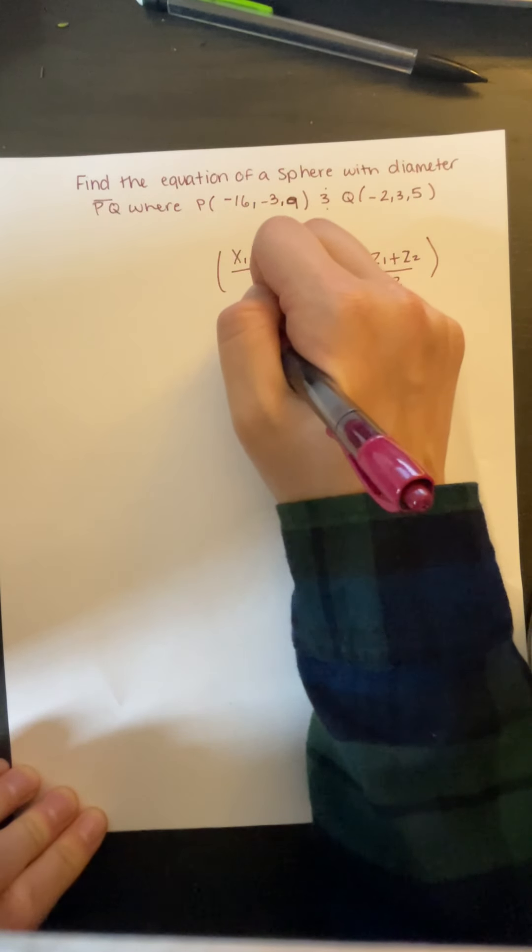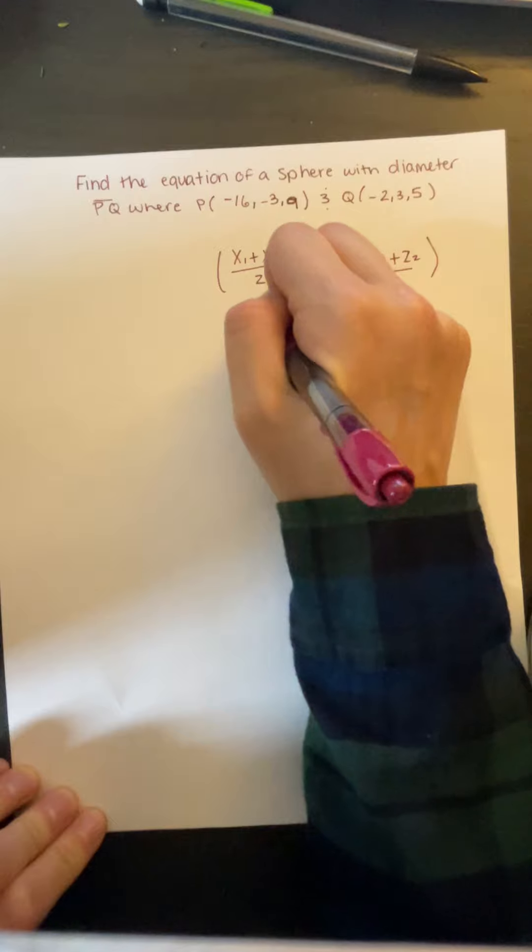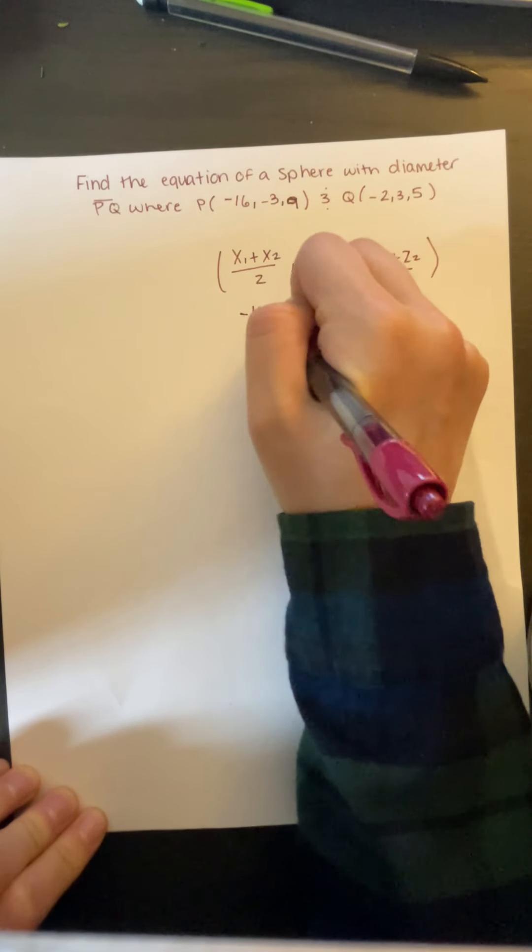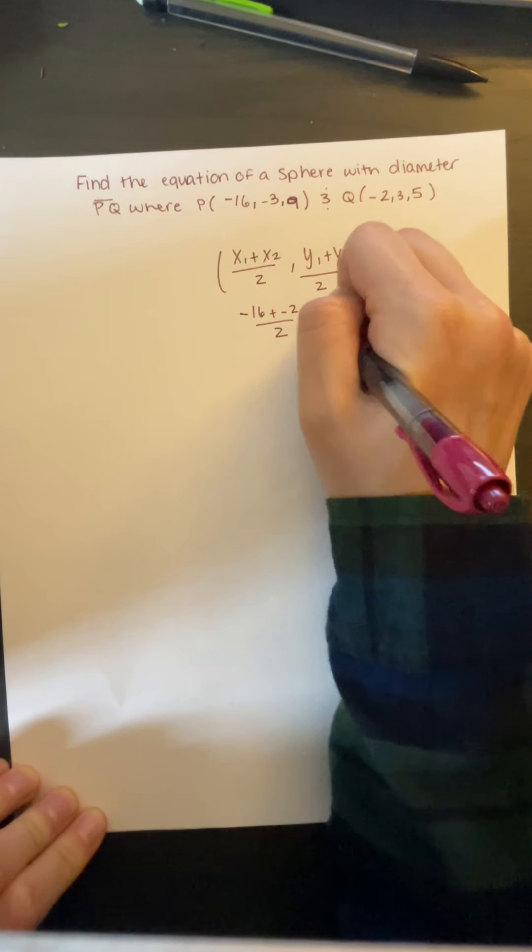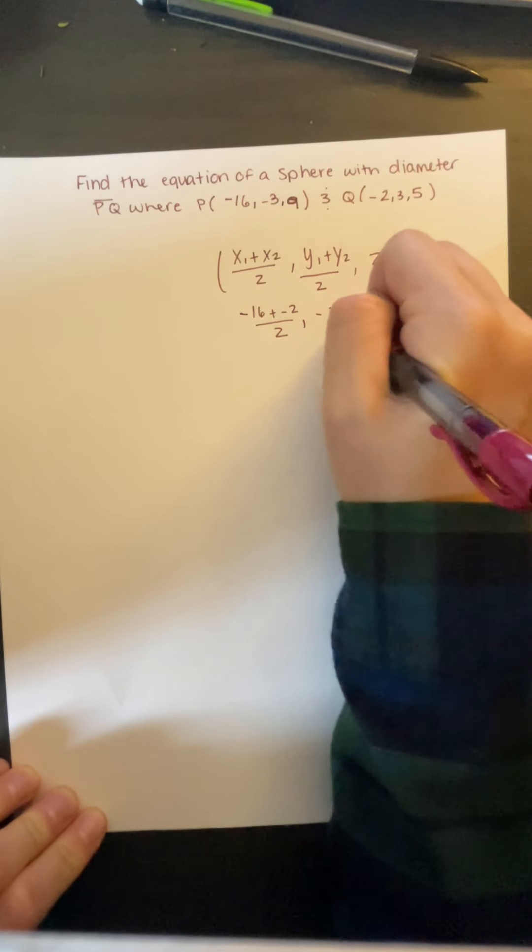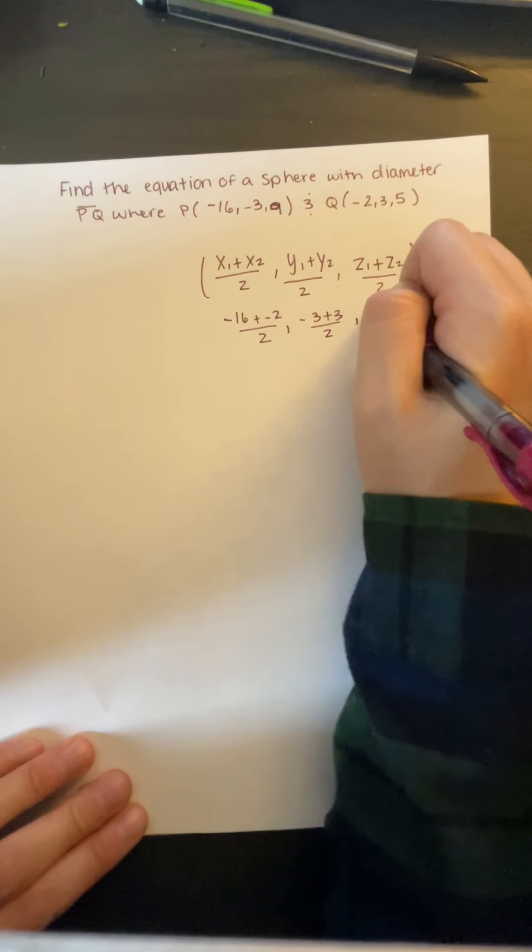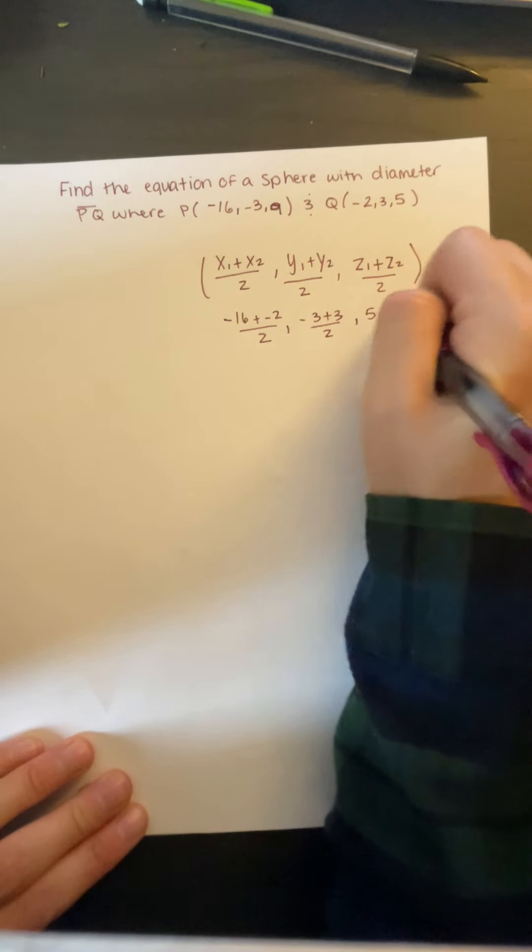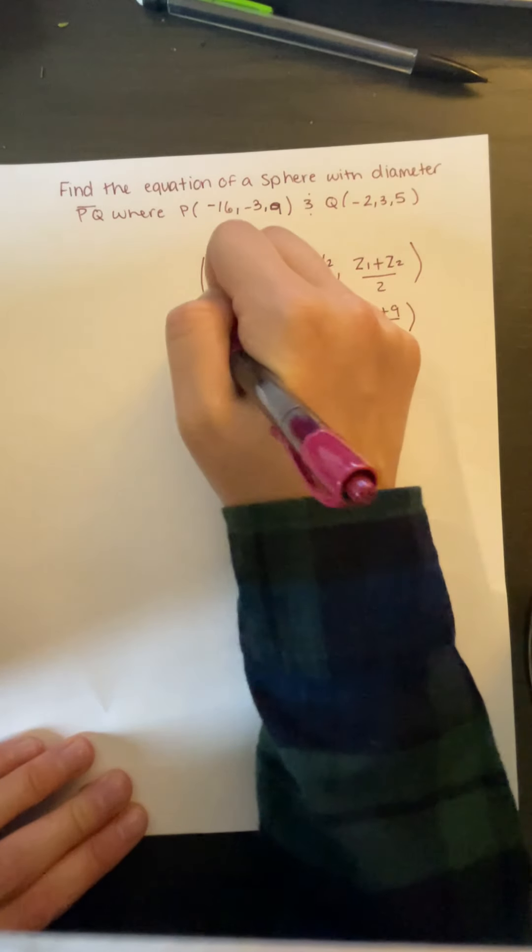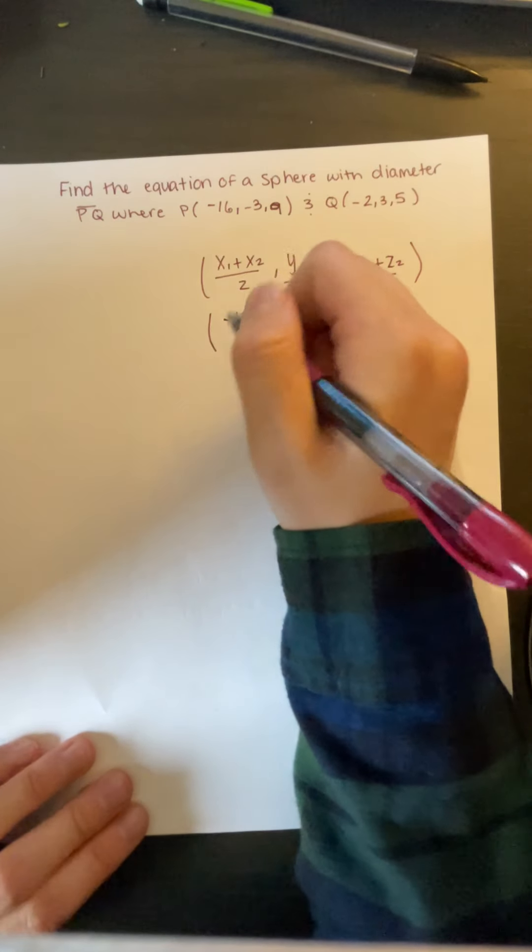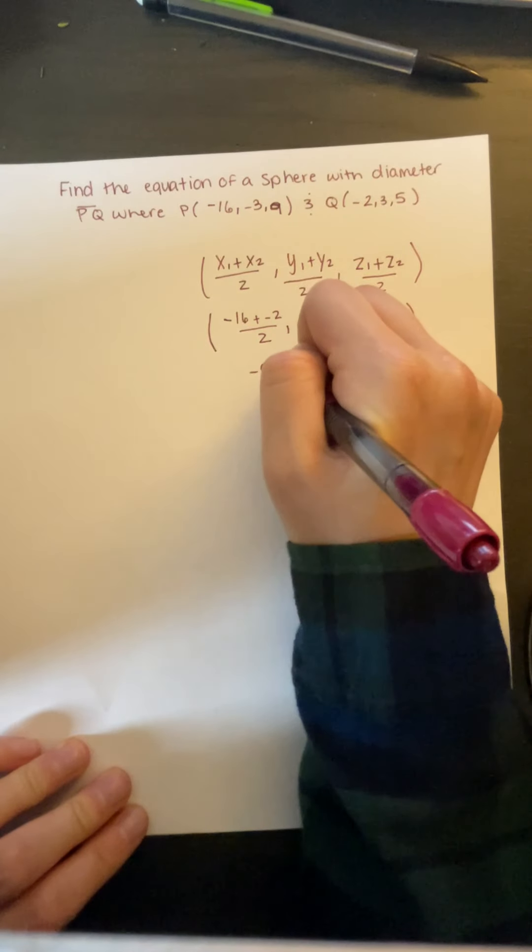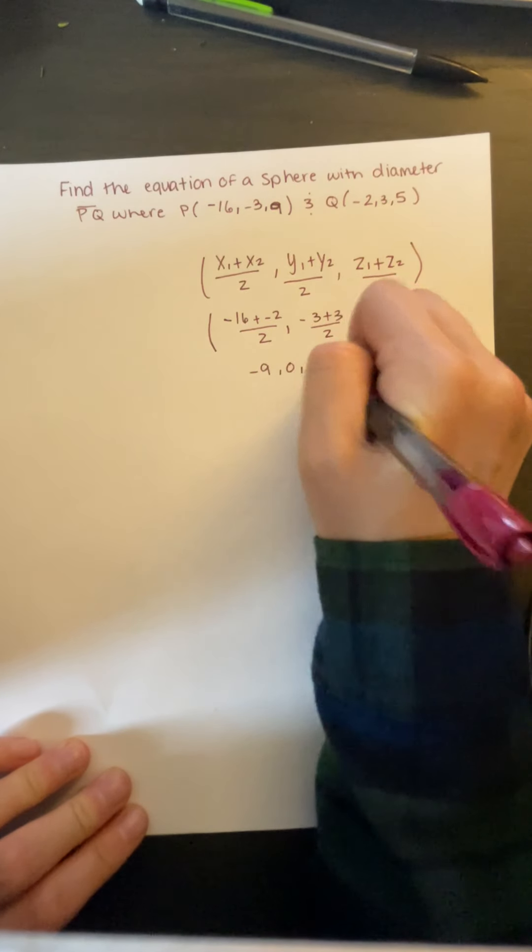So we'll get negative 16 plus negative 2 divided by 2, negative 3 plus 3 divided by 2, and 5 plus 9 divided by 2. We'll end up with negative 9, 0, and 7 as our midpoint.